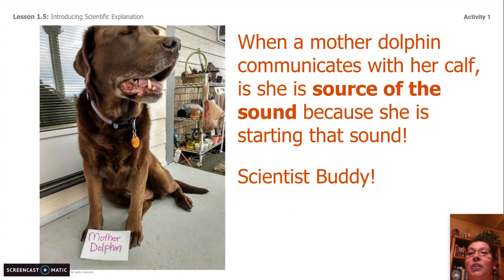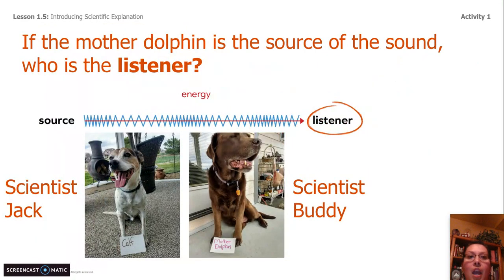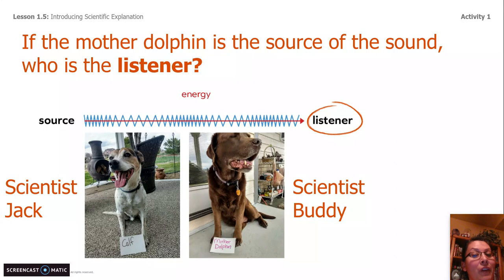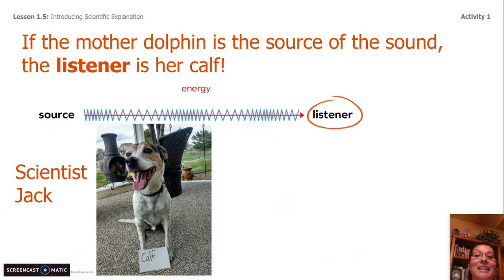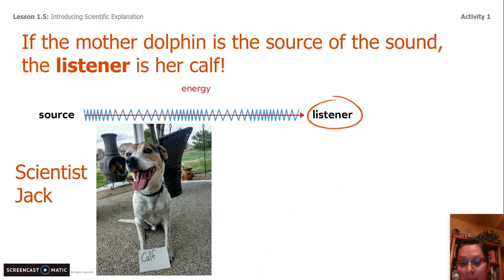Scientist Jack is correct. If the mother dolphin is the source, she is starting the sound. If the mother dolphin is a source of the sound, who is the listener? Scientist Jack says it's the calf. Scientist Buddy says it's the mother dolphin. Scientist Jack is correct — if the mother dolphin is a source, then the listener is her baby calf.